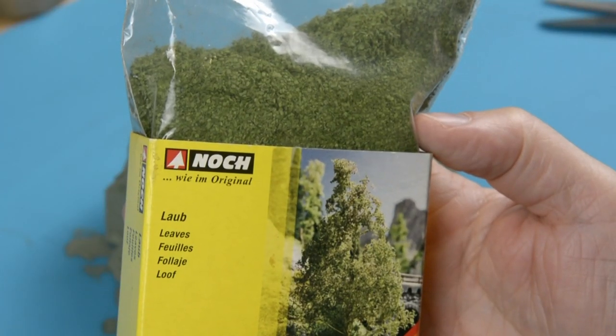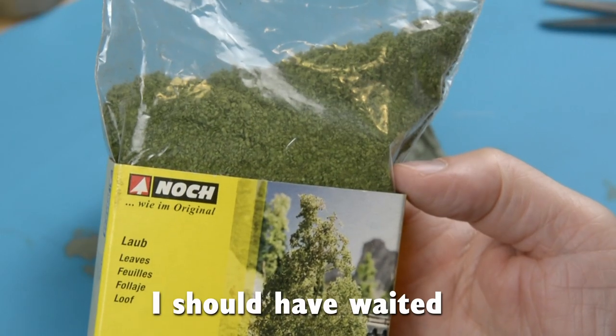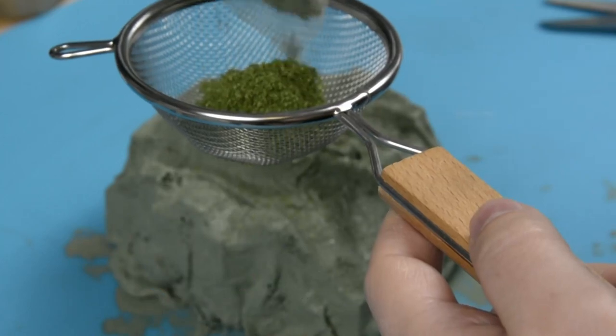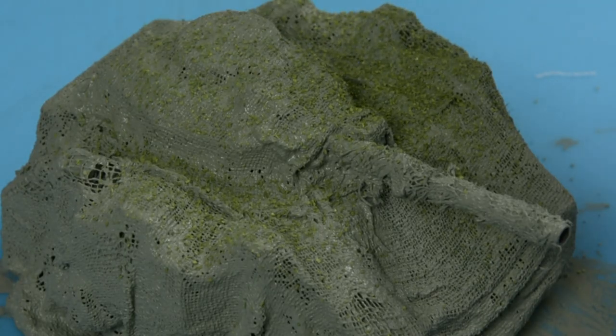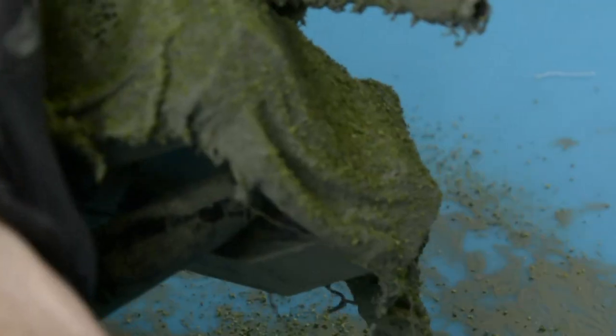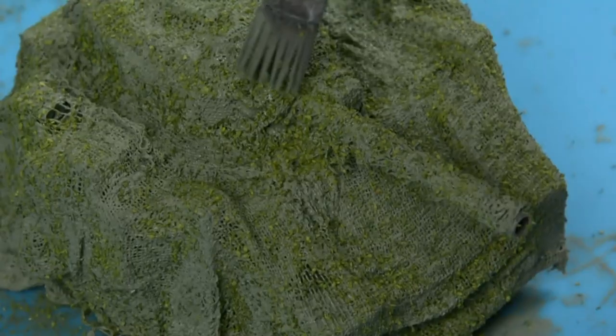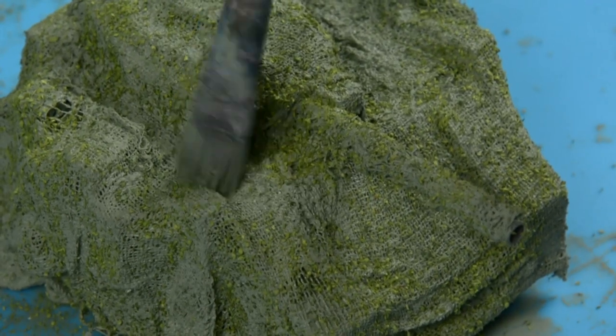While the paint is wet, I'll add some leaves from Nock. It was a bit too much, so I'm knocking back the effect by stippling with a brush.